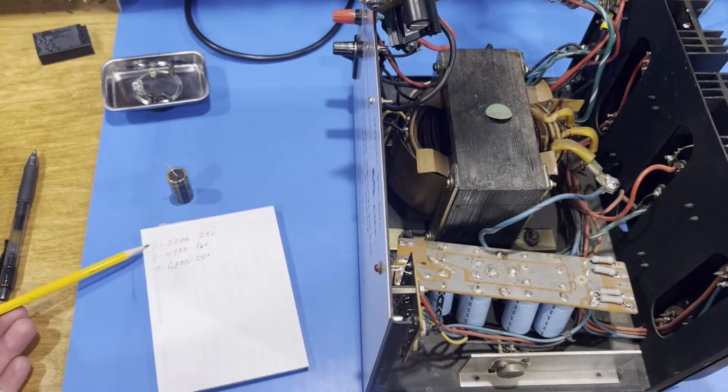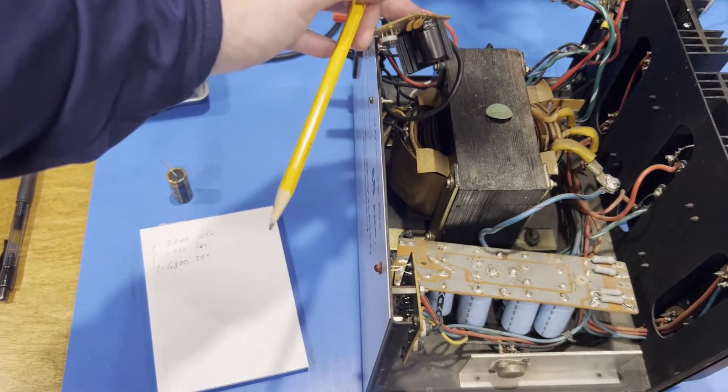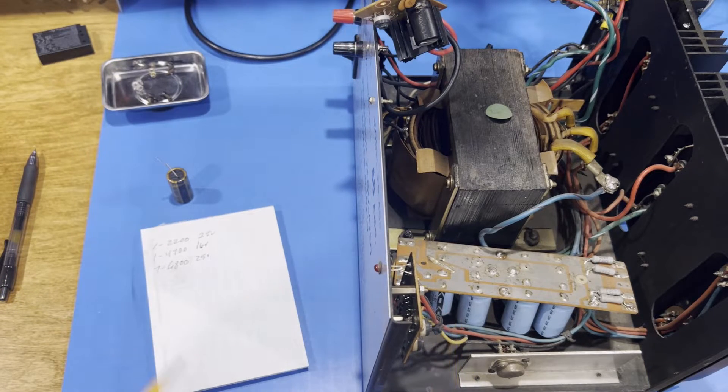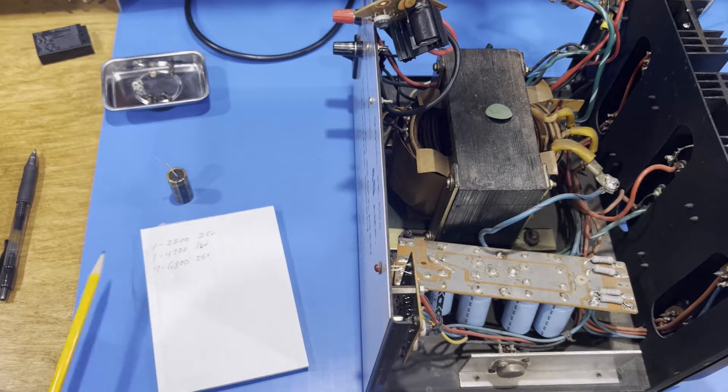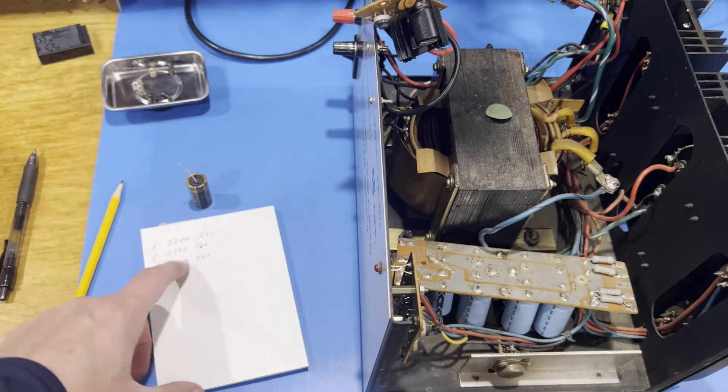All right, it turns out we need one 2200 microfarad at 25 volts up here on this little control board. We need a 4700 right here, and we need 7, 6800 at 25 volts. I don't happen to have. The only one I have here is the 2200. I've got a nice NickyCon gold, but it looks like I'm going to have to order the others.